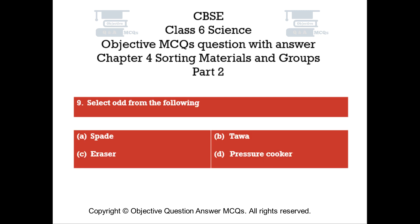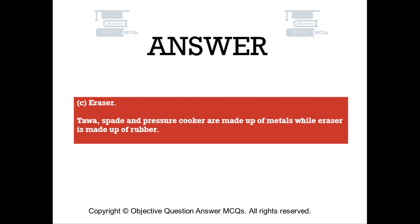Question number 9. Select the odd one from the following. Option A: Spade. Option B: Tawa. Option C: Eraser. Option D: Pressure Cooker. The right answer is Option C — Eraser. Tawa, Spade, and Pressure Cooker are made up of metals, while eraser is made up of rubber.